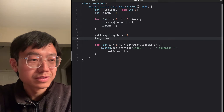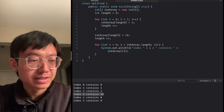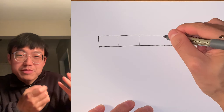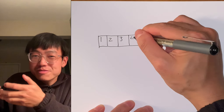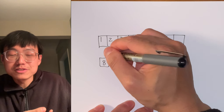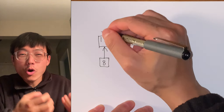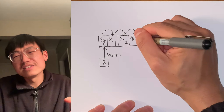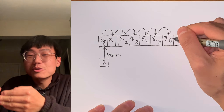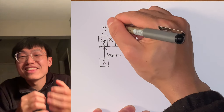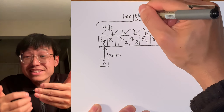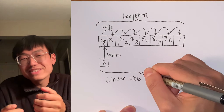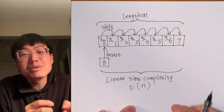Now let's talk about inserting at the start of the array. To insert an element at the start, we need to shift all other elements to the right by one index to create space for the new element. For example, if we want to insert 8, all elements need to shift one cell to the right, then 8 takes the first cell. This is a costly operation — the time taken is proportional to the length of the array, giving a linear time complexity of O(n).